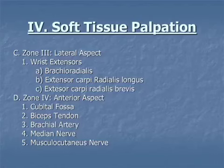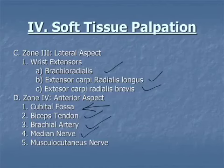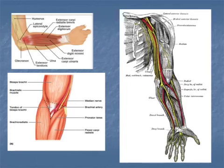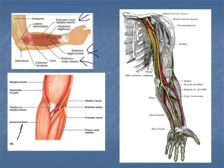Some of the wrist extensor muscles include the brachioradialis, extensor carpi radialis longus and brevis — 'longus' meaning longer and 'brevis' meaning shorter. We also have the extensor digitorum minimi, which is very tiny, and the extensor carpi ulnaris — all extensor muscles that bring the wrist or fingers into extension posteriorly. An important location is the cubital fossa, through which the bicep tendon and brachial artery run, along with a couple of nerves.